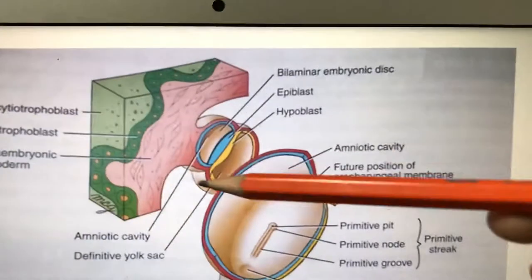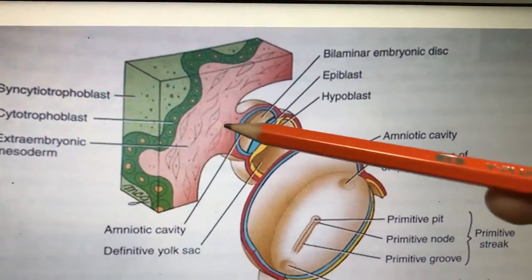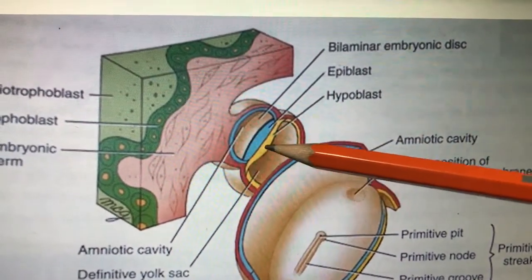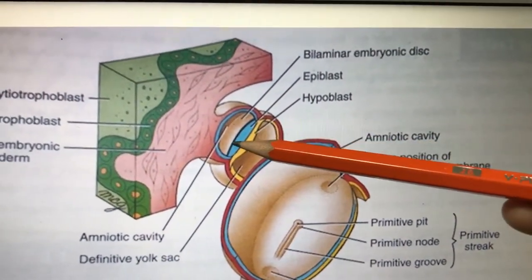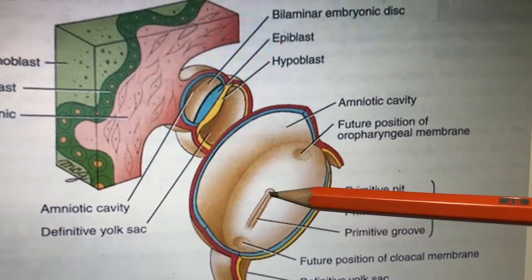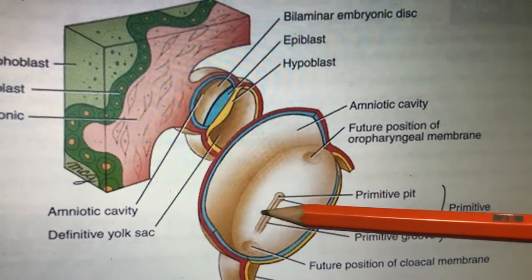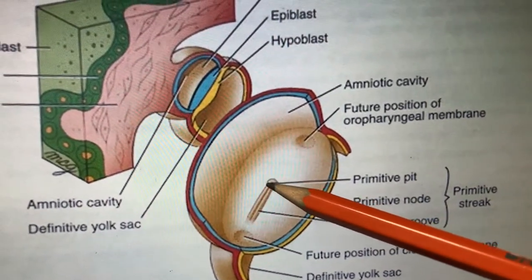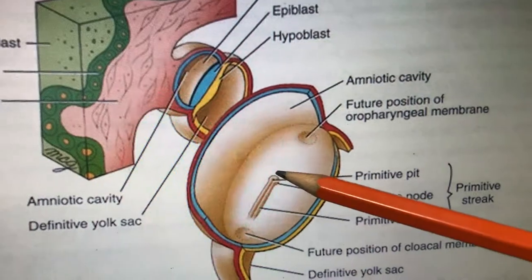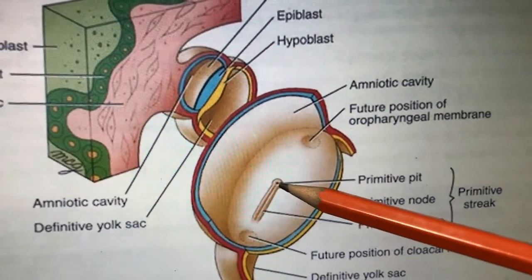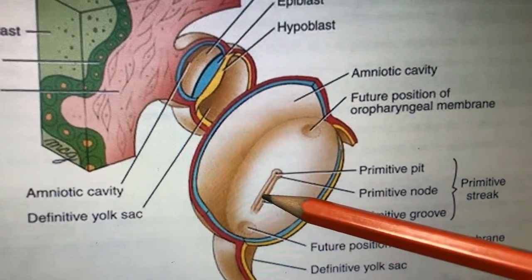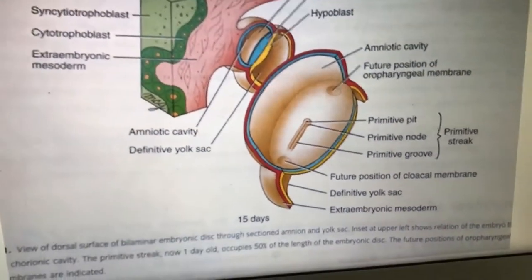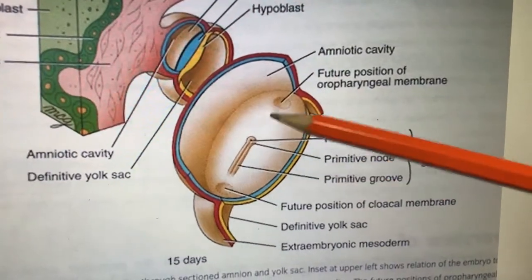The embryonic disc is attached to the uterine endometrium via the connecting stalk. The epiblast layer and hypoblast layer are present. In the epiblast region, a groove forms — that is called the primitive groove or streak. Cells from both sides of the epiblast accumulate at this groove. At the cranial end, the accumulation of cells forms the primitive node; at the center is a pit called the primitive pit. Cells from the epiblast enter this groove, go down, and form a new layer called mesoderm.